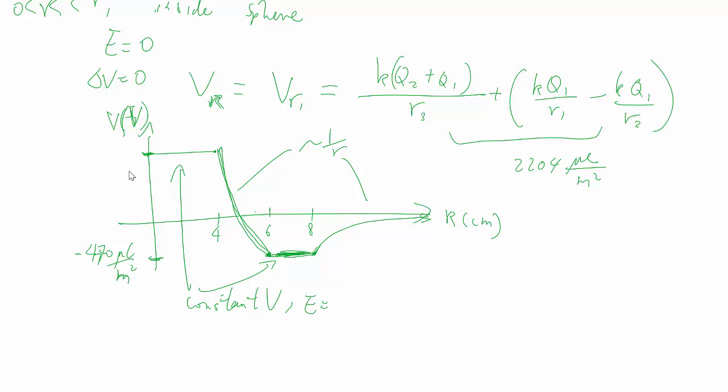Because E equals zero everywhere inside a conductor at equilibrium. So somewhat similar to working out the electric field. For electric field, we would use Gauss's law and go from the inside out, whereas for potential V, knowing the electric field, we would integrate from infinity and come from the outside inwards.